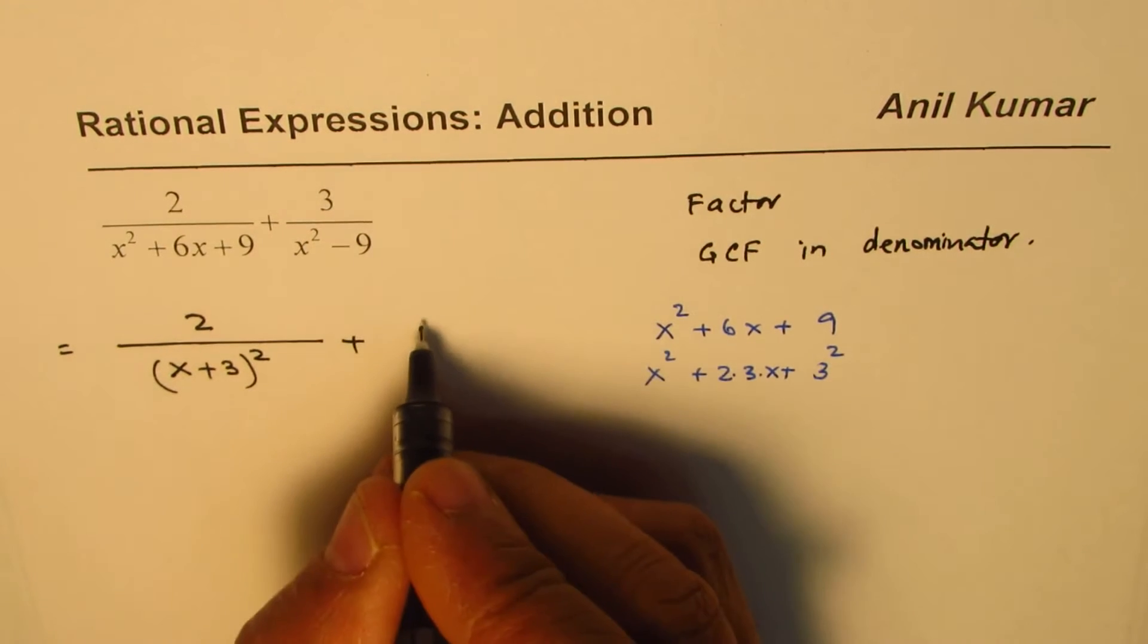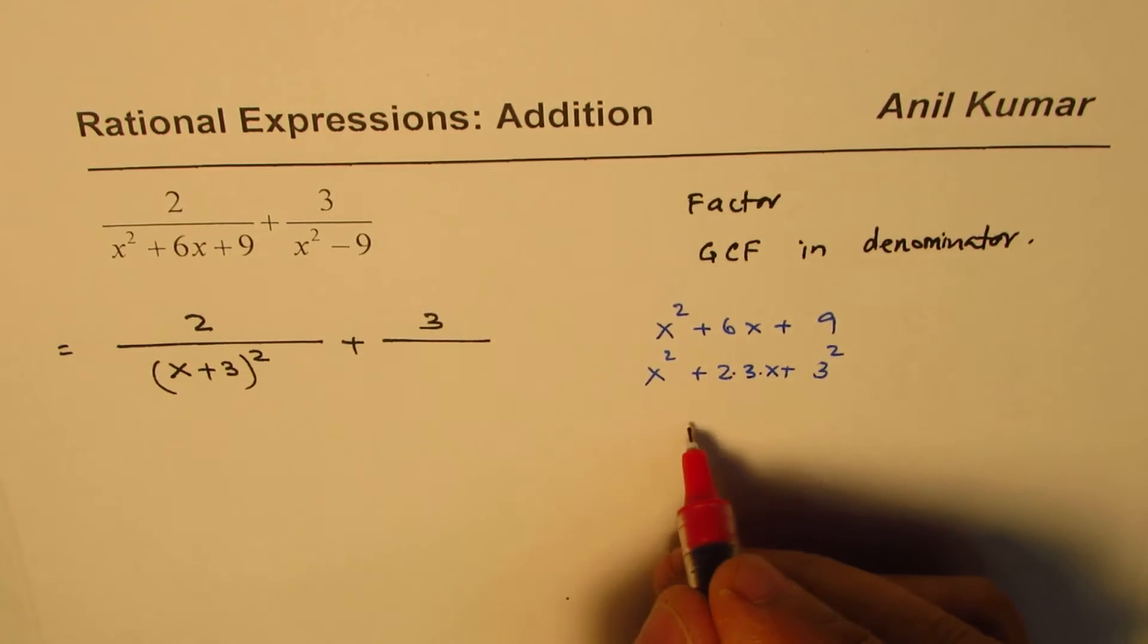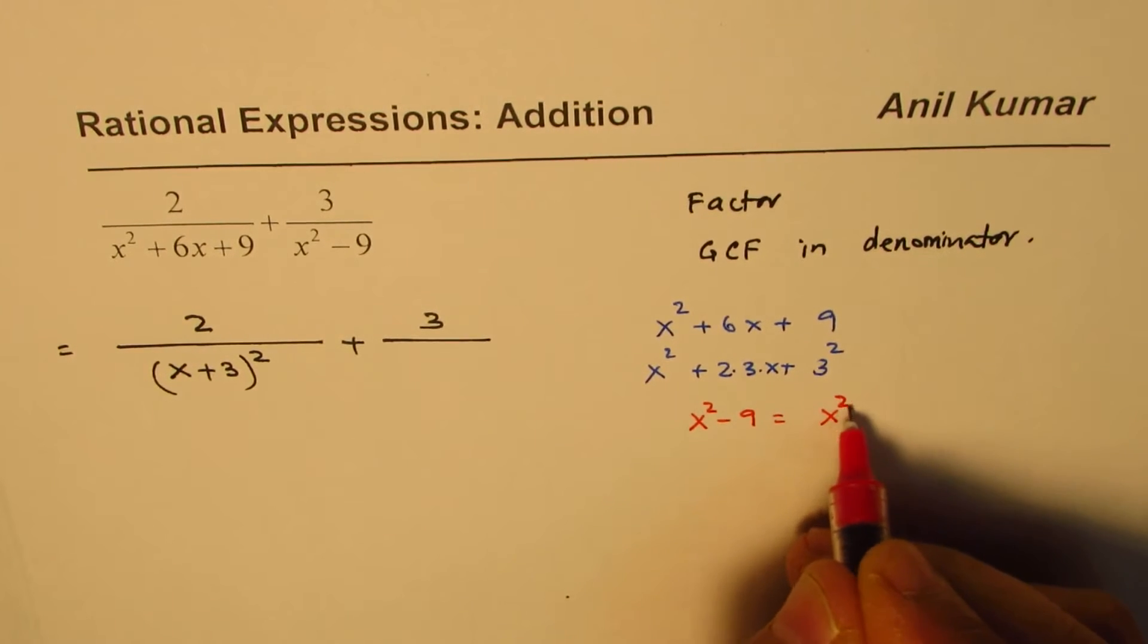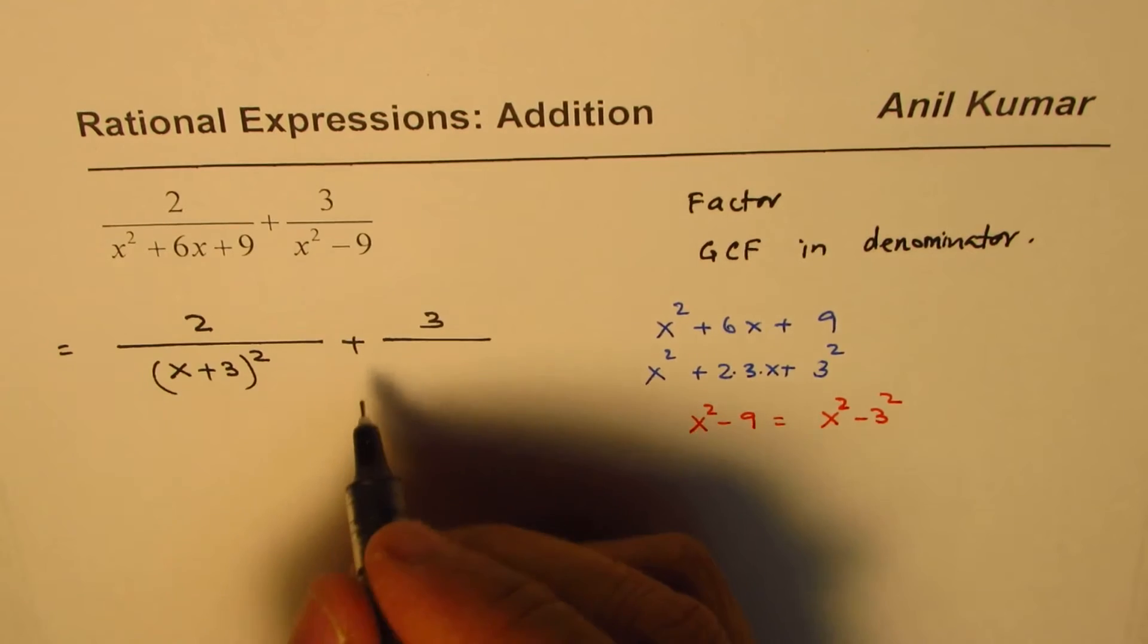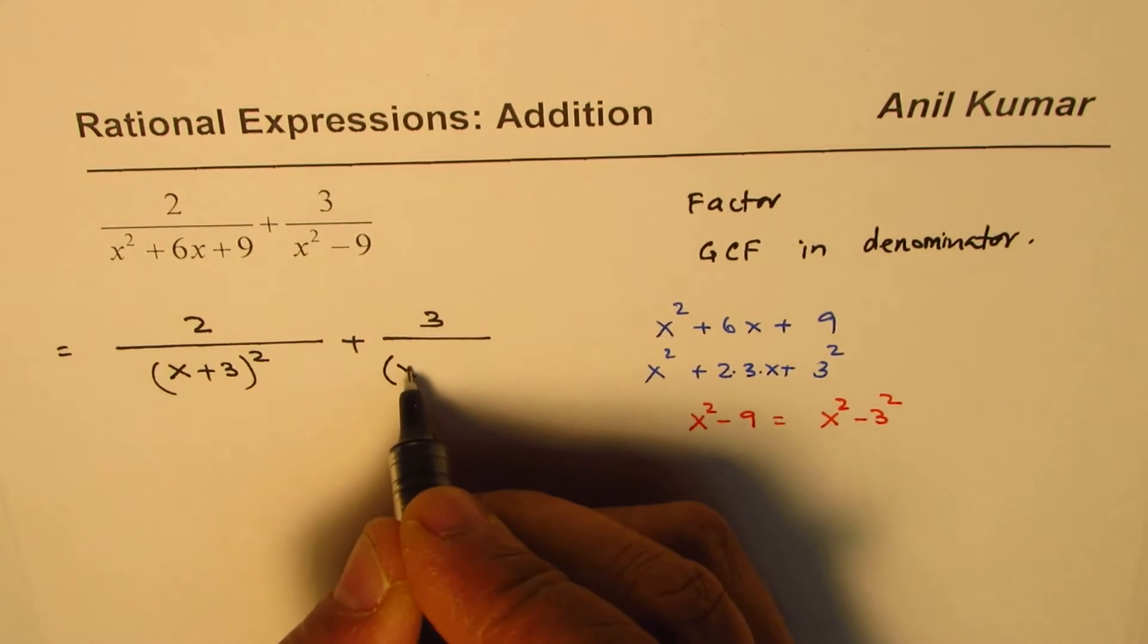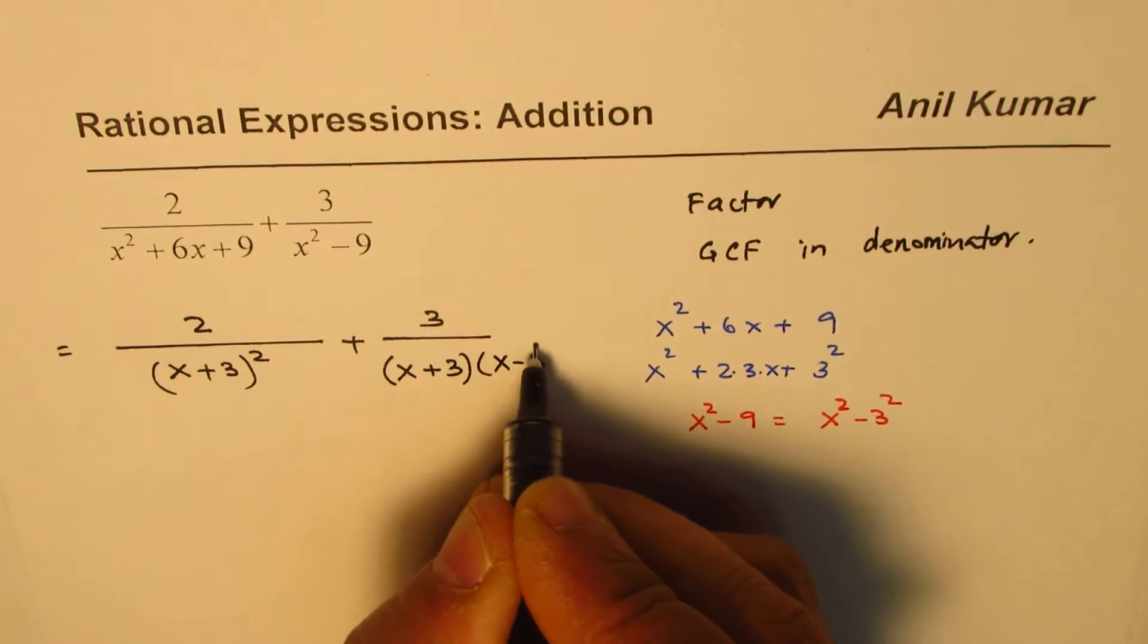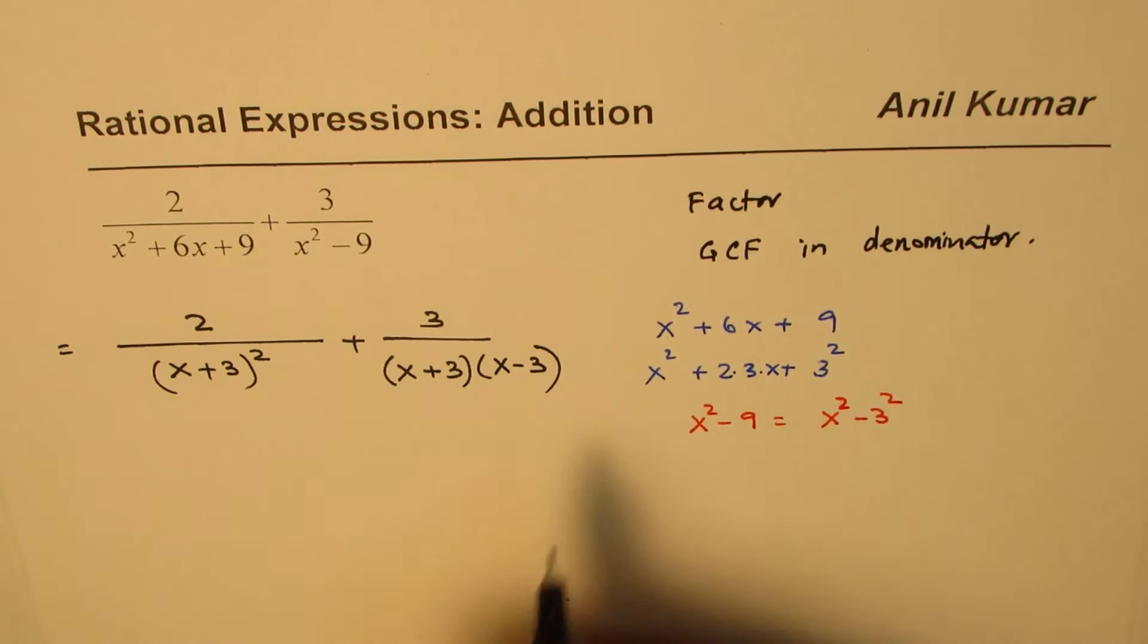And here we have 3 over x squared minus 9. So, x squared minus 9, we could think as x squared minus 3 squared. That is the difference of squares. Difference of squares is a special factor. We could write this as x plus 3 times x minus 3. You may have to review the factoring skills for getting into rational expressions and their operations.